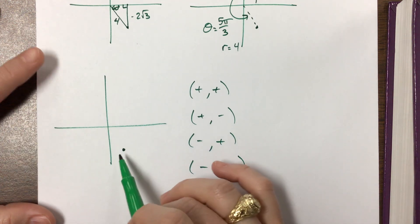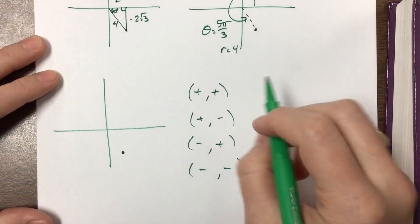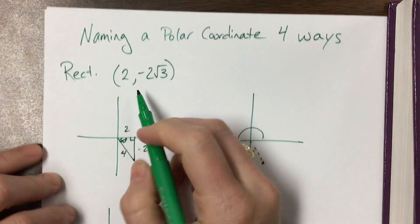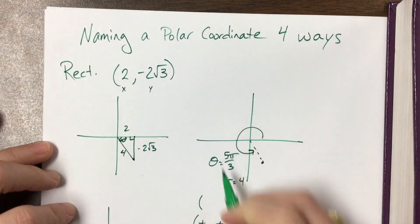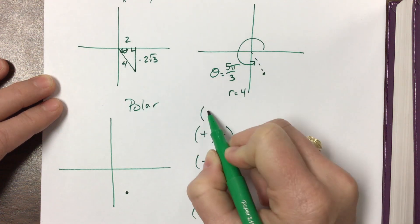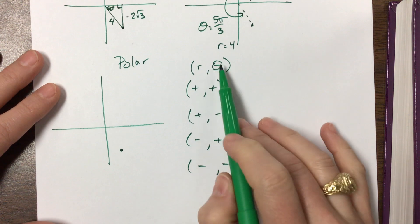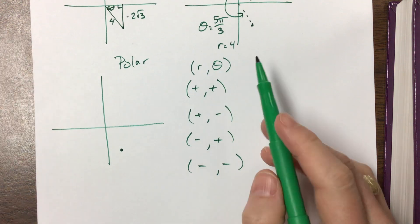Keep in mind, in rectangular form this is your x value, this is your y value, but in polar form this is your r, this is your theta - which is a little confusing because we usually want to do theta first but it gets written second.